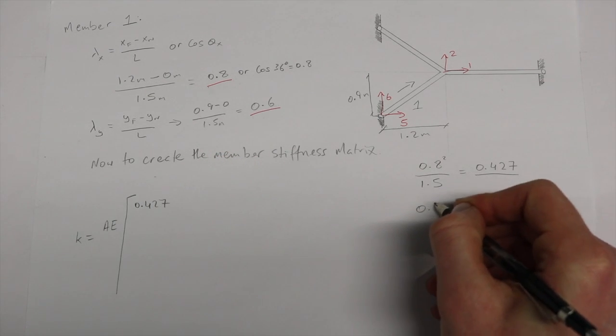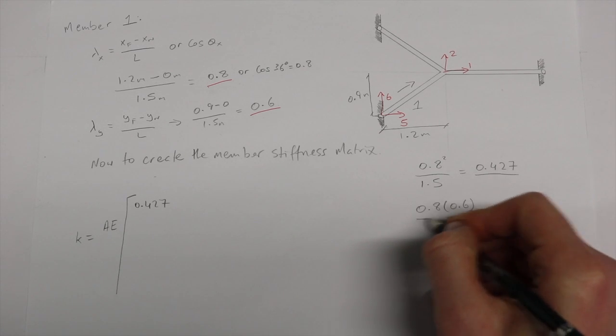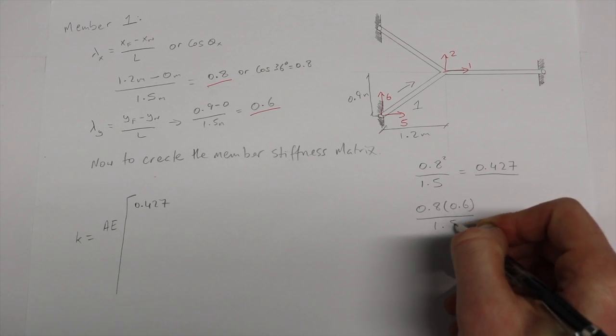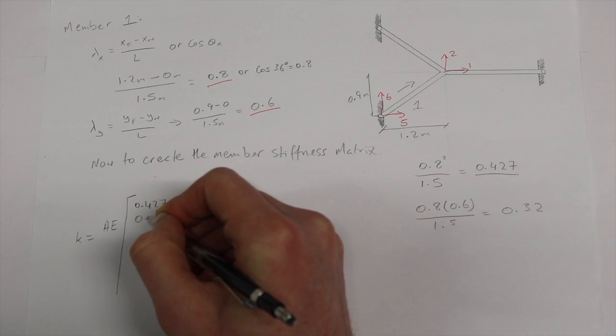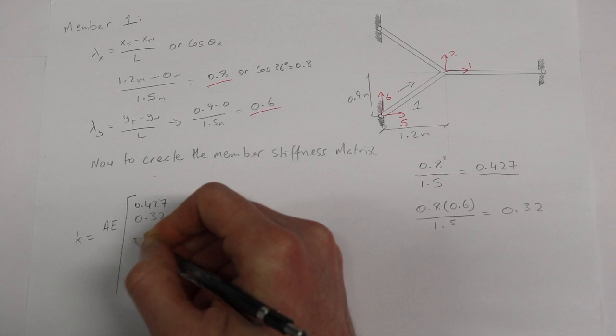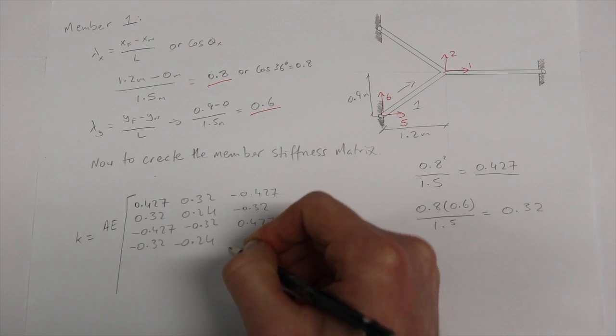Our second figure is lambda x by lambda y, which is 0.8 by 0.6, and again divided by 1.5 our length, we get 0.32. We continue this on to create our completed member matrix.